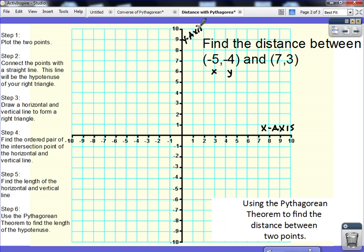So notice on the left-hand side here, I have some steps for you, and the first step we're going to take care of is just plotting the two points. So the point (-5, -4), since my x value is -5, I am going to move left five places on the x-axis, and since my y value is -4, I'm going to move down 4, and that is where the ordered pair (-5, -4) is located.